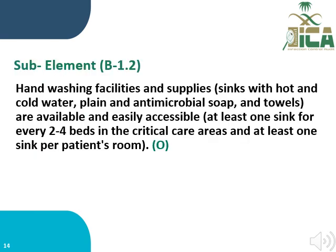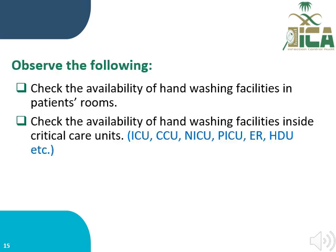Sub-element B1.2: hand washing facility and supplies — a sink with hot and cold water, plain and antimicrobial soap, and towels should be available and easily accessible. At least one sink for every two to four beds in the critical care area, and at least one sink per patient room. Here we need observation to evaluate this sub-element. Observe patient rooms and critical care units, checking availability of hand washing facilities. One sink is needed per patient room, and one sink per two to four beds in critical care units such as ICU, CCU, NICU, OR, and hemodialysis.